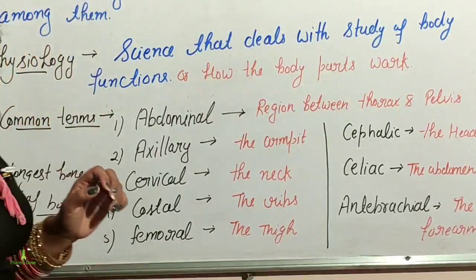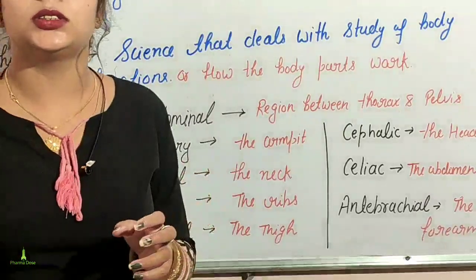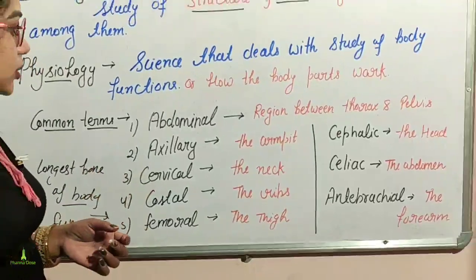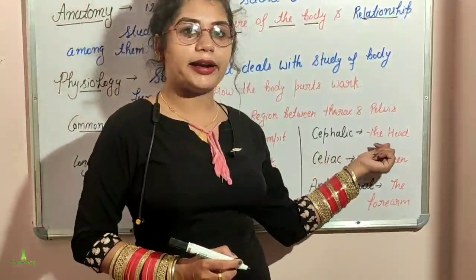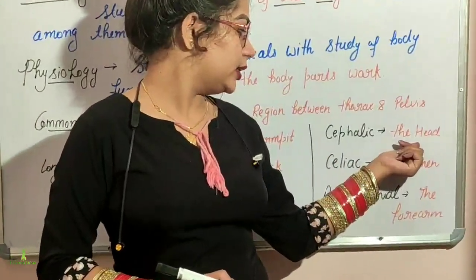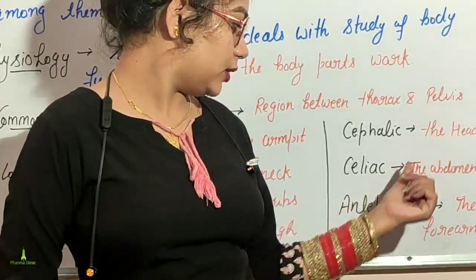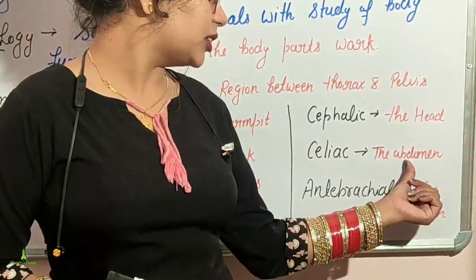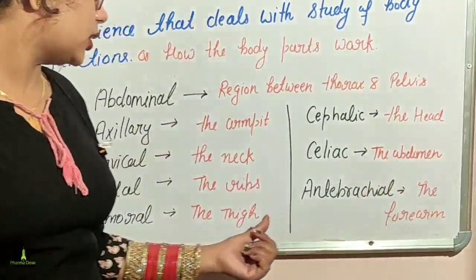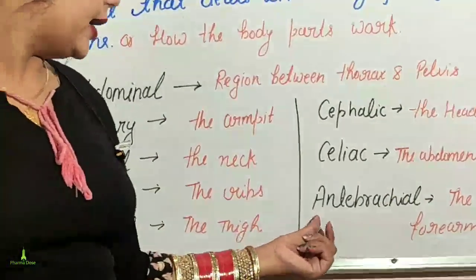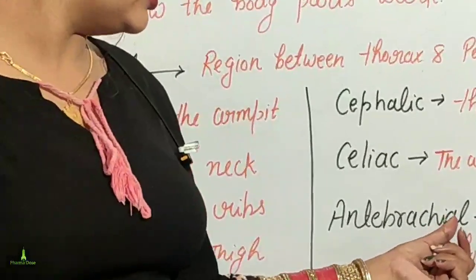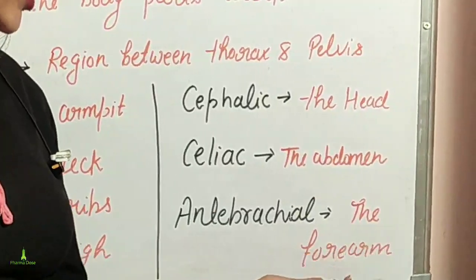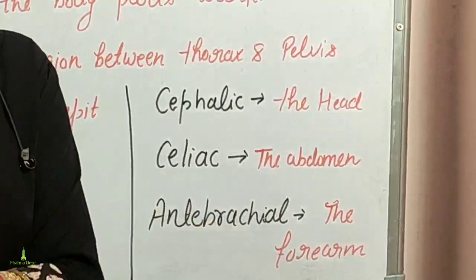The smallest bone of the body is the stapes bone. The cephalic region refers to the head. The antebrachial region is used for the forearm.